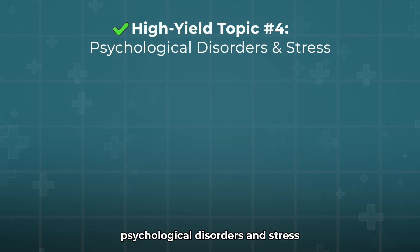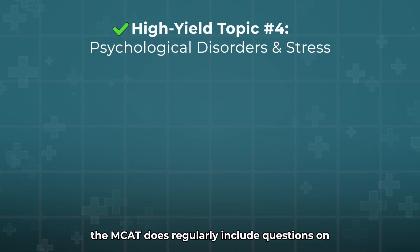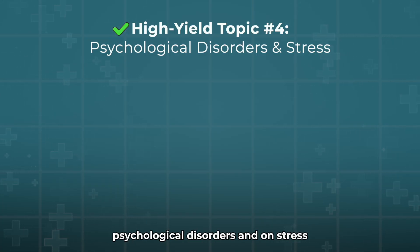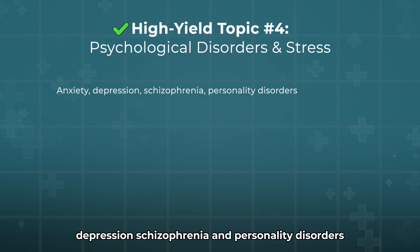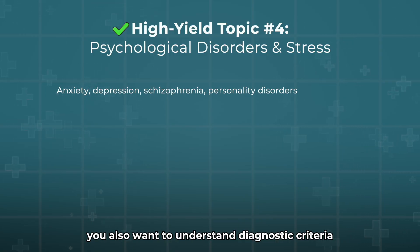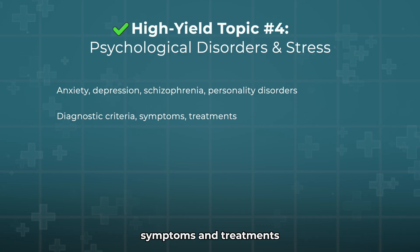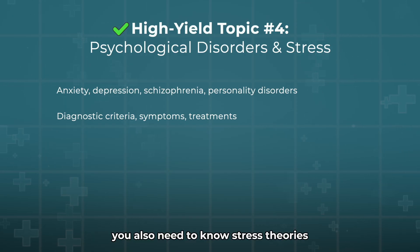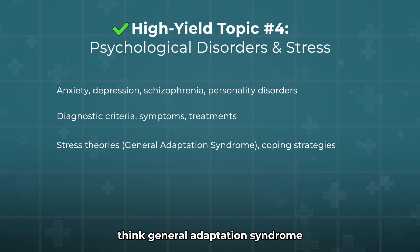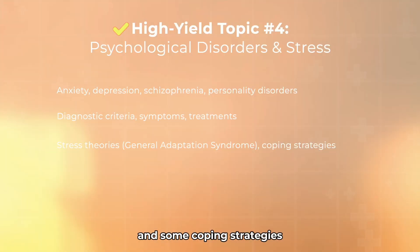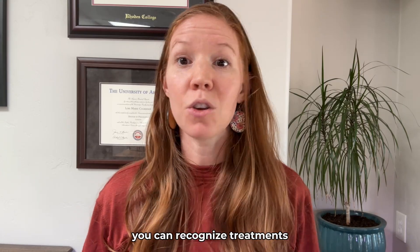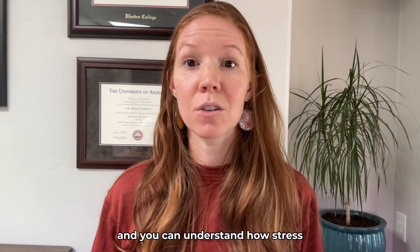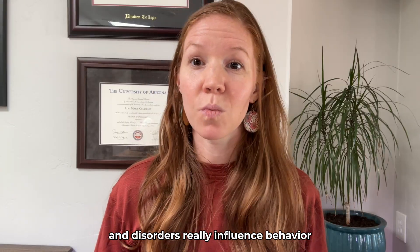High-yield topic number four: psychological disorders and stress. The MCAT regularly includes questions on psychological disorders and stress. You want to understand anxiety, depression, schizophrenia, and personality disorders — including diagnostic criteria, symptoms, and treatments. You also need to know stress theories: think general adaptation syndrome and coping strategies. Make sure you can quickly identify symptoms, recognize treatments, and understand how stress and disorders influence behavior.